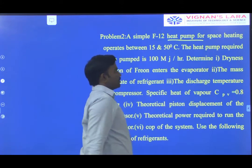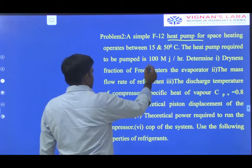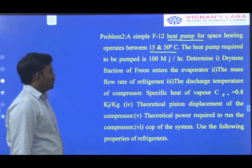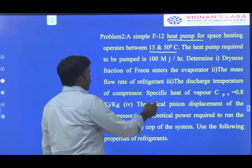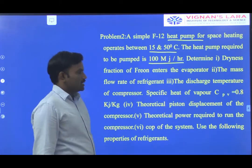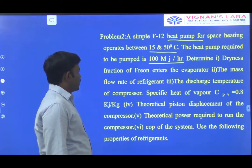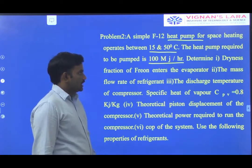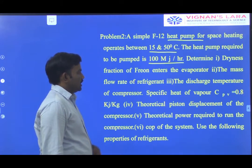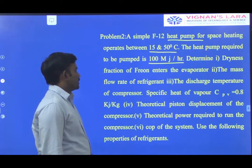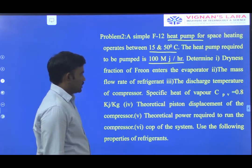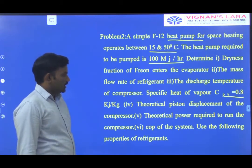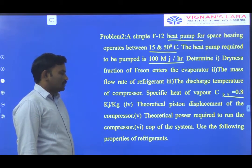This heat pump for space heating operates between 15 and 50 degrees centigrade temperature limits. The heat required to be pumped is 100 mega joule per hour — that is the heat pump capacity. We have to determine: the dryness fraction of F12 entering the evaporator, the mass flow rate of refrigerant, and the discharge temperature of the compressor.